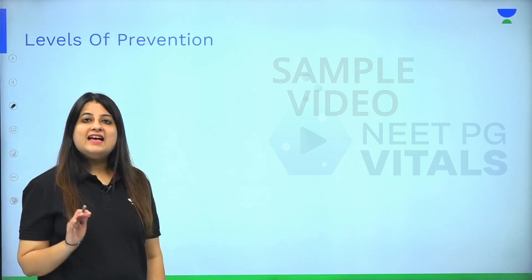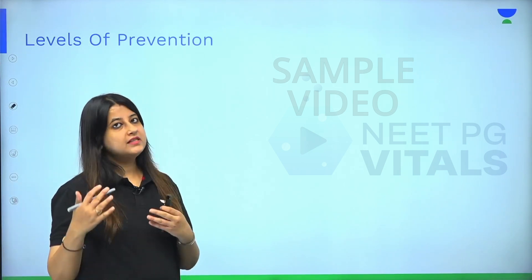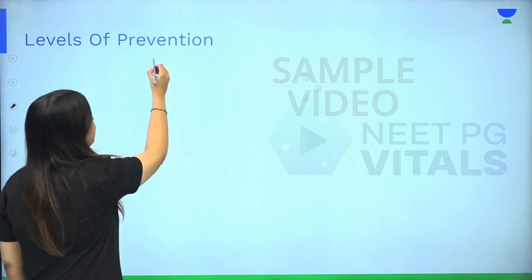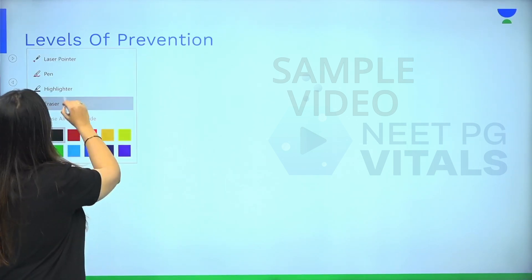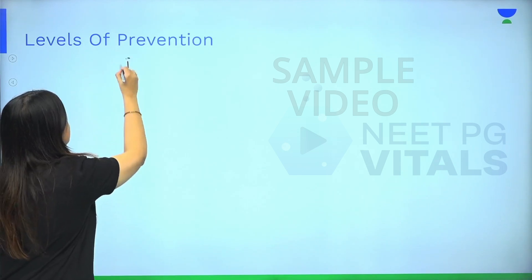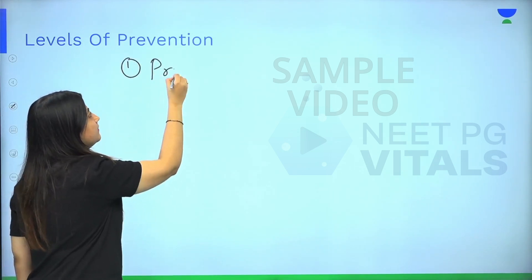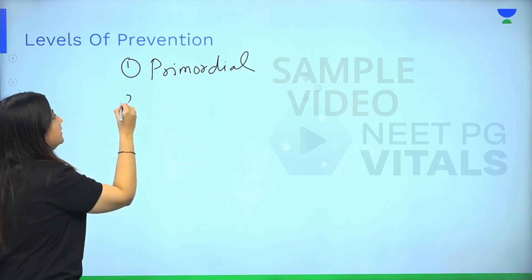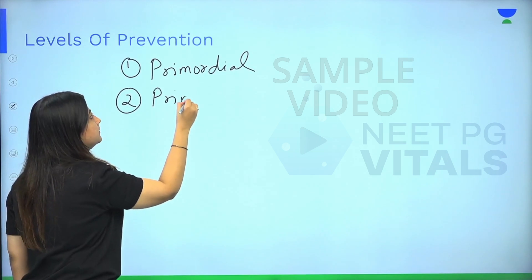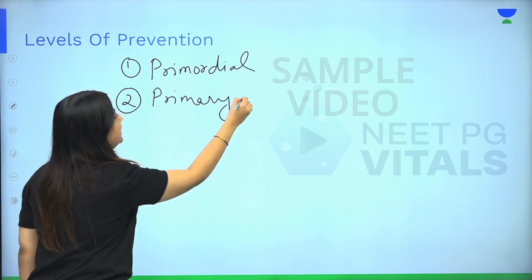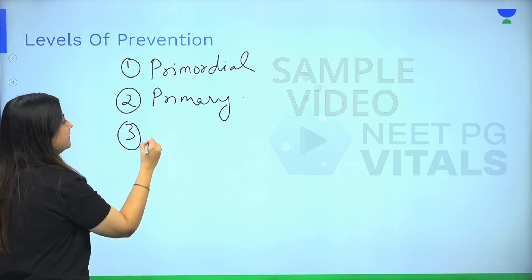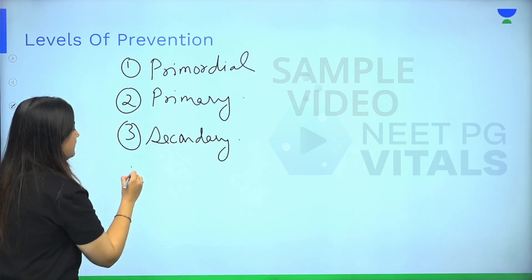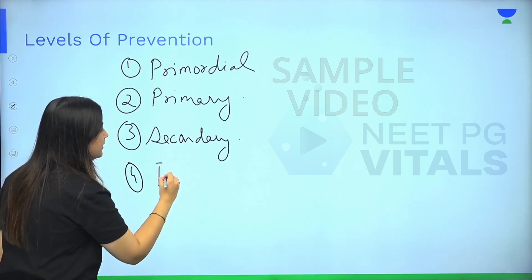As the name suggests, levels of prevention, we're going to have different levels. So let us write down the names of these levels of prevention. The first one is primordial, the second one is primary, next is secondary, and one more — tertiary.